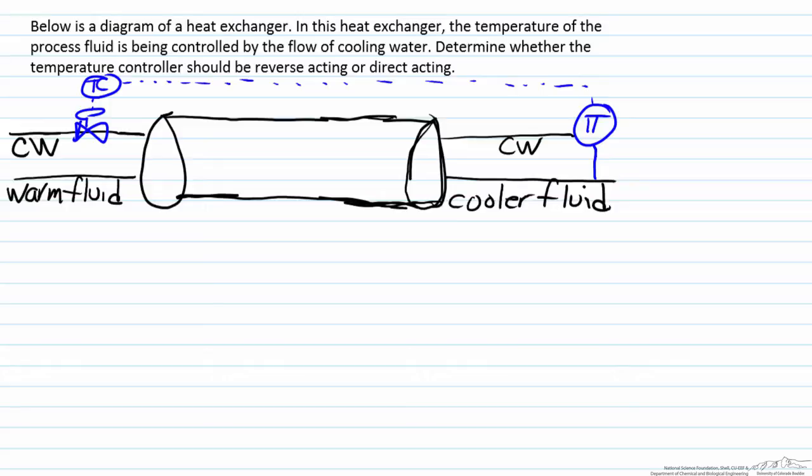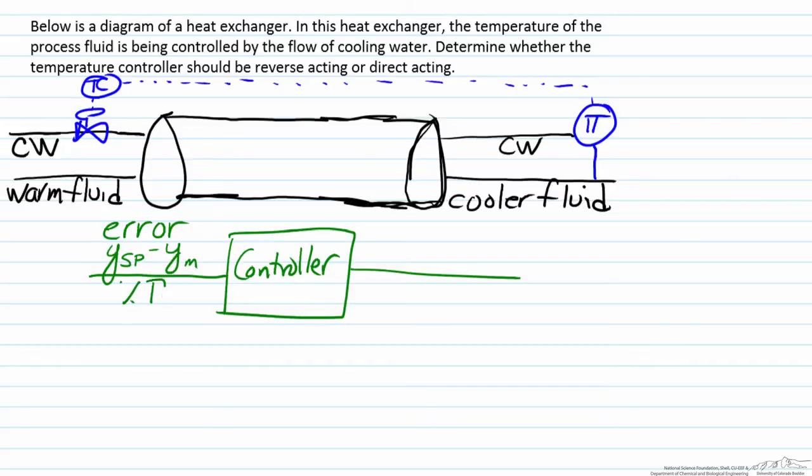To think about what the role of the controller is we are going to zoom in and just look at what the block diagram for the controller aspect is. Here will be our controller and what will come into the controller is the error, in other words the difference between the set point and the actual measured value. This error is measured typically in either units such as transmitter output or in milliamps.